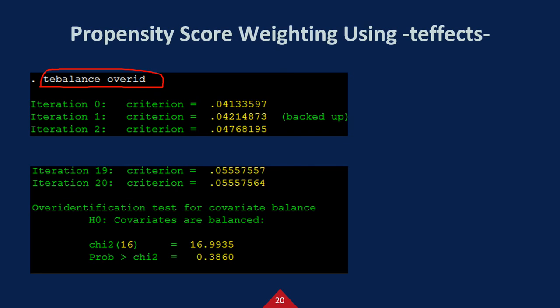Here, the null hypothesis is that covariates are balanced. And it performs a chi-square test like this. We don't want to reject the null hypothesis, so the p-value should be greater than 0.05.